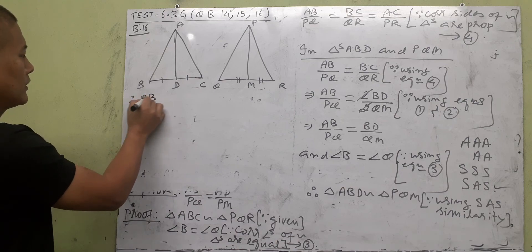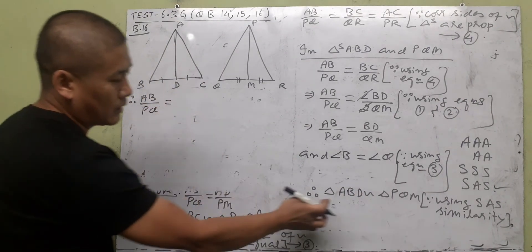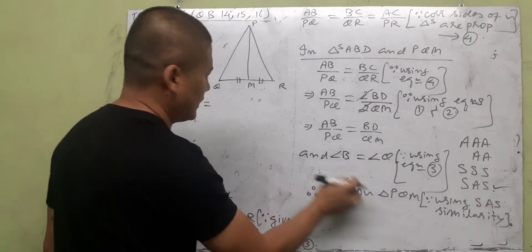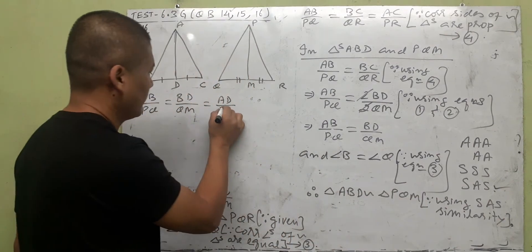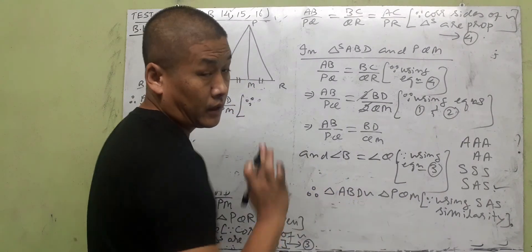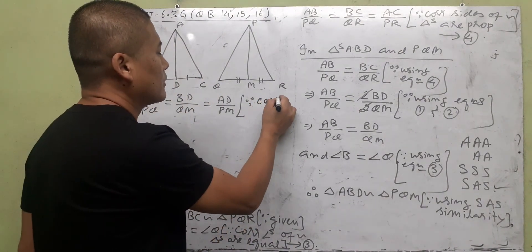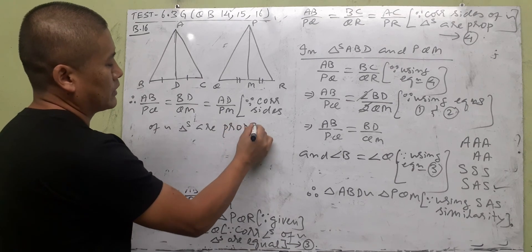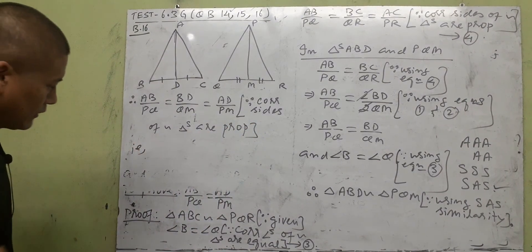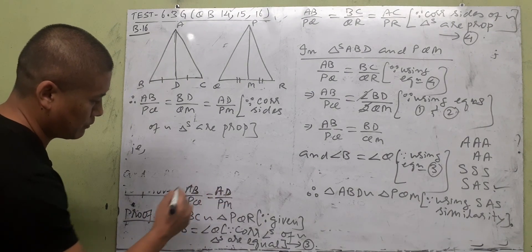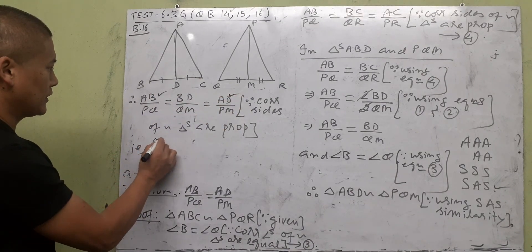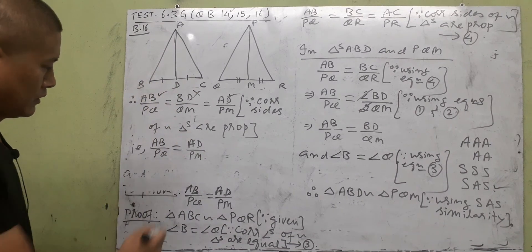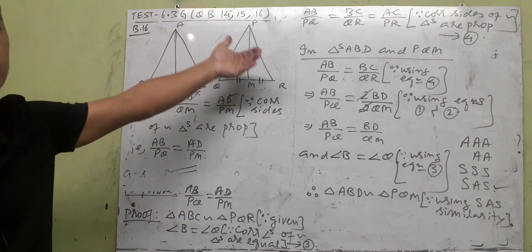Since triangle ABD is similar to triangle PQM, corresponding sides are proportional: AB/PQ = BD/QM = AD/PM. Taking the first and third ratios, AB/PQ = AD/PM. Hence proved. That concludes both questions; go and leave the test.